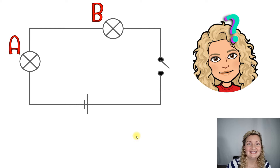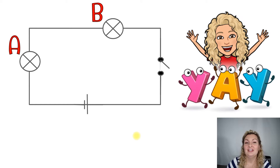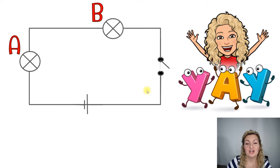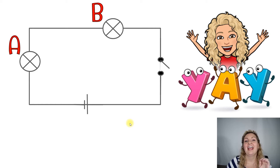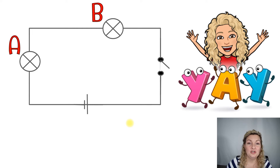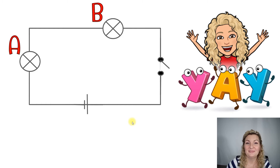Go ahead and pause it. And let's check out our answer. So in this case, none of them are going to light up because we have an open switch, which just means that there's a gap in our circuit or a break. Electrons cannot flow, so there will be no current flowing in the circuit. Therefore, none of the light bulbs will light up. Let's try another one.